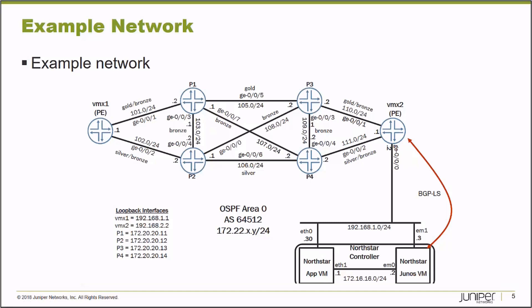This diagram is a little complex, just because I wanted to include some IP addresses so you can see the data that's streamed toward the Northstar Controller server. There are six nodes in this example network: VMX1 and VMX2, which are MPLS label switch path ingress nodes; P routers P1, P2, P3, and P4, which are core routers in this network diagram; and a Northstar Controller. The analytics components are going to listen on IP address 192.168.1.30. VMX1 will stream from 192.168.1.1, VMX2 from 192.168.1.2, with different addresses on the P routers. Once telemetry is enabled on these nodes, data will be streamed from each node in this network environment.